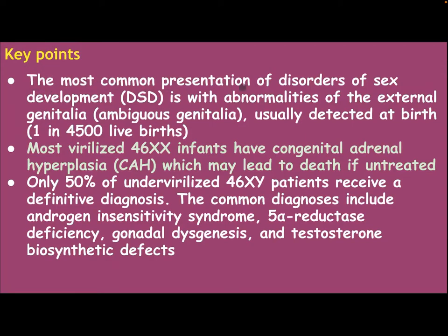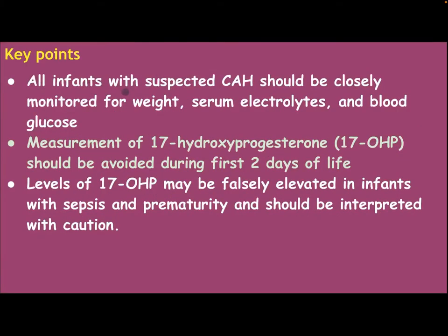Key points: The most common presentation of disorder of sex development DSD is with abnormalities of the external genitalia — ambiguous genitalia — usually detected at birth in 1 in 4,500 live births. Most virilized 46XX infants have congenital adrenal hyperplasia, which may lead to death if untreated. Only 50% of undervirilized 46XY patients receive a definitive diagnosis. The common diagnoses include androgen insensitivity syndrome, 5-alpha-reductase deficiency, gonadal dysgenesis, and testosterone biosynthetic defects. All infants with suspected CAH should be closely monitored for weight, serum electrolytes, and blood glucose. Measurement of 17-hydroxyprogesterone should be avoided during the first two days of life.